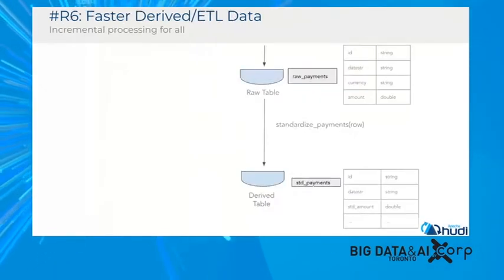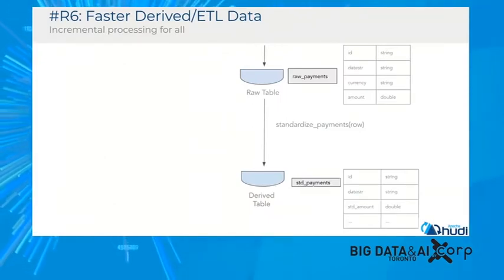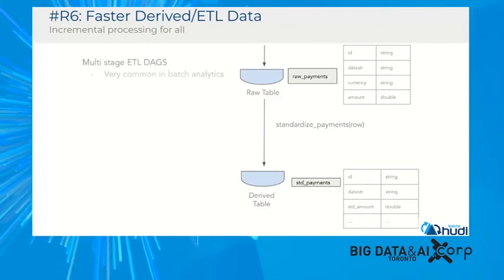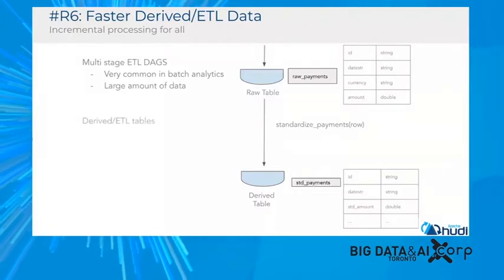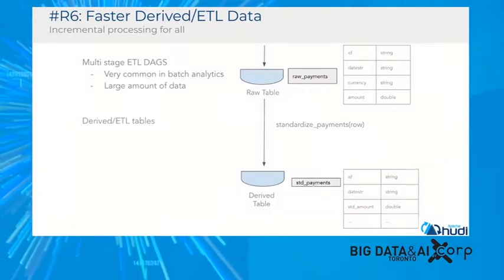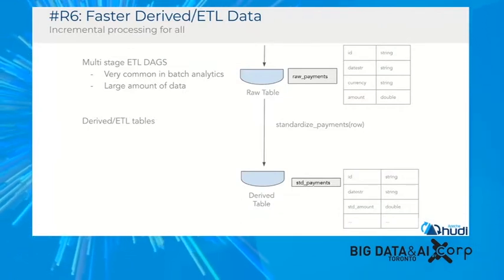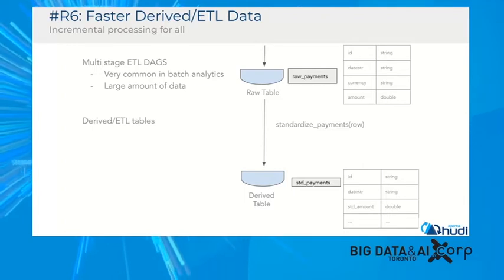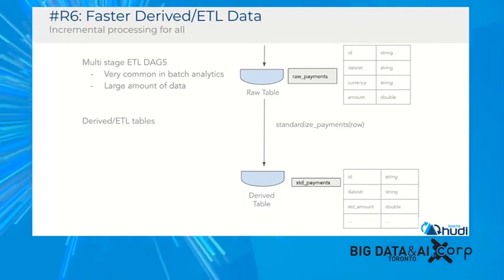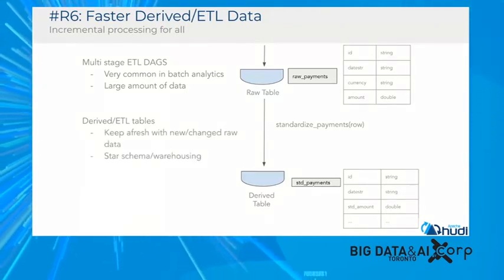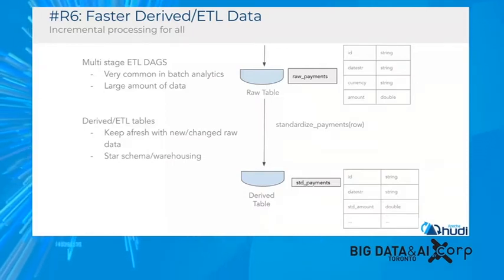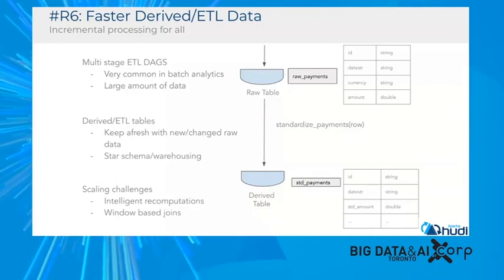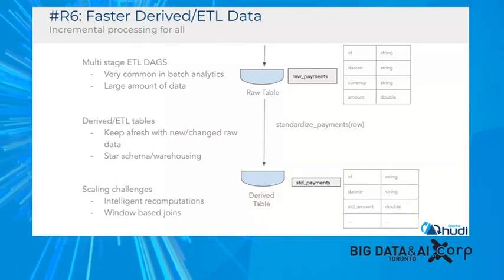The next requirement is about derived tables. Say we build raw tables — what about consumers who want to do joins and build new tables? These are generally multi-stage ETL DAGs, common in batch analytics, reading from tens of tables. For example, a payments table with multiple currencies where you want to standardize to a common currency. How do you keep derived table data fresh? Do you pull all the data, use checkpointing, or do window joins? There are many scaling challenges for derived tables, some similar to raw data and some unique.